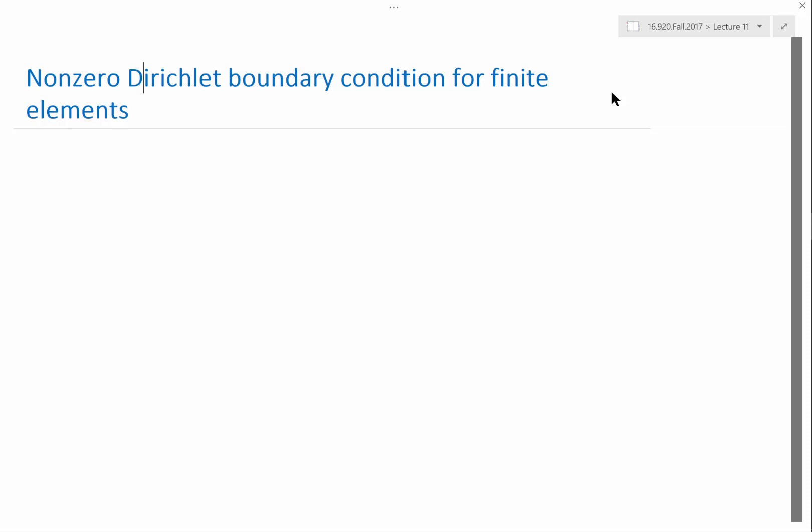We'll be talking about two types of boundary conditions in this lecture. Before, the only type of boundary conditions we know how to enforce are zero Dirichlet boundary conditions.